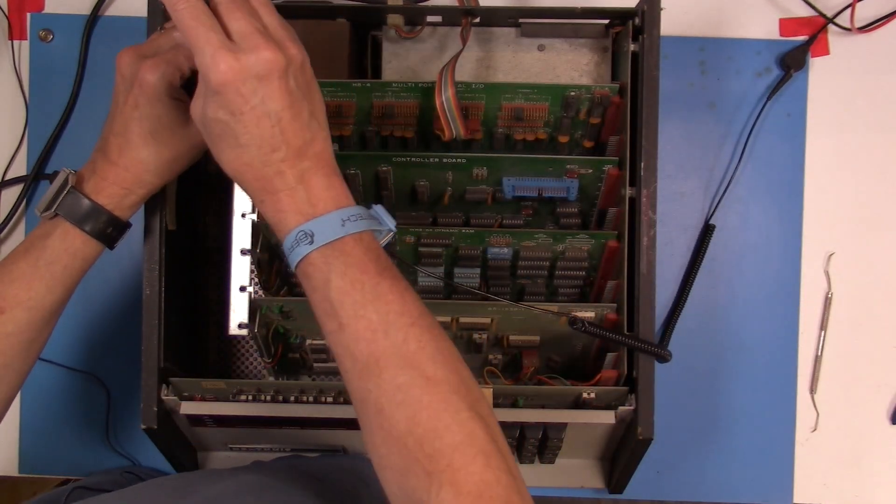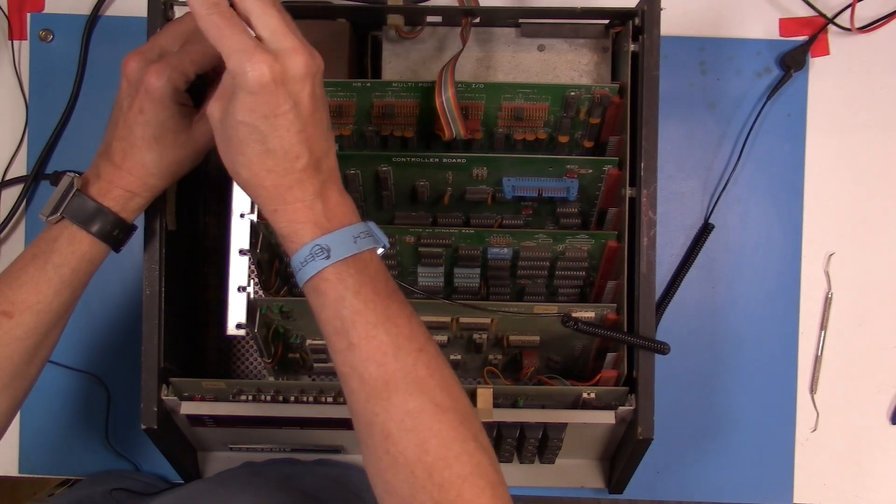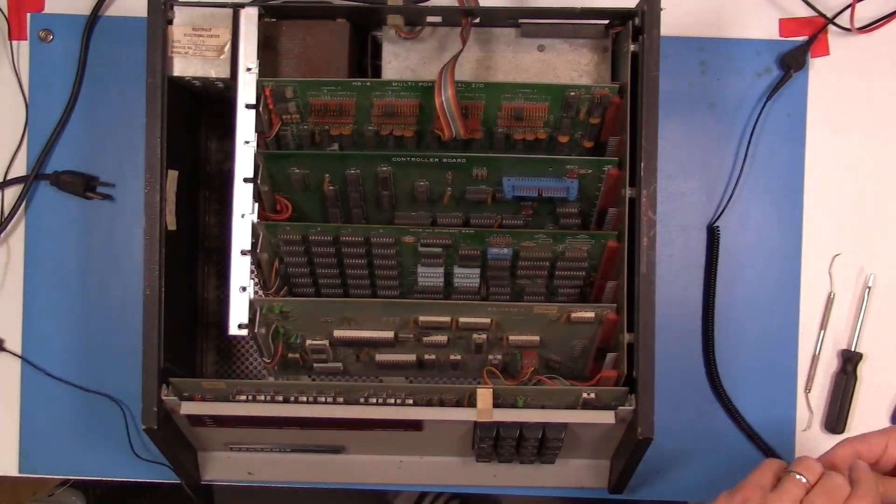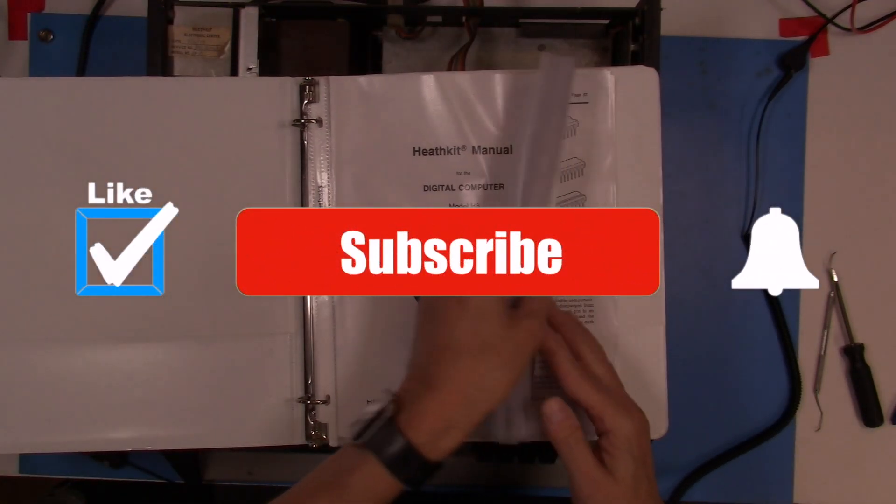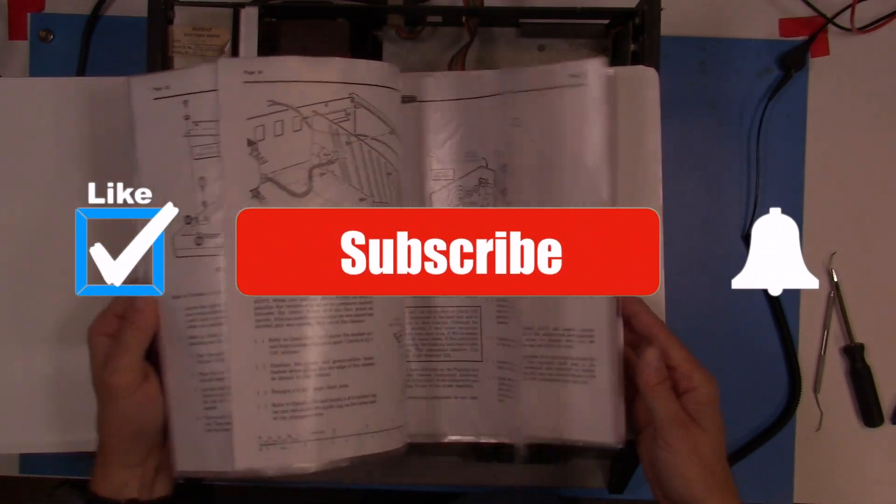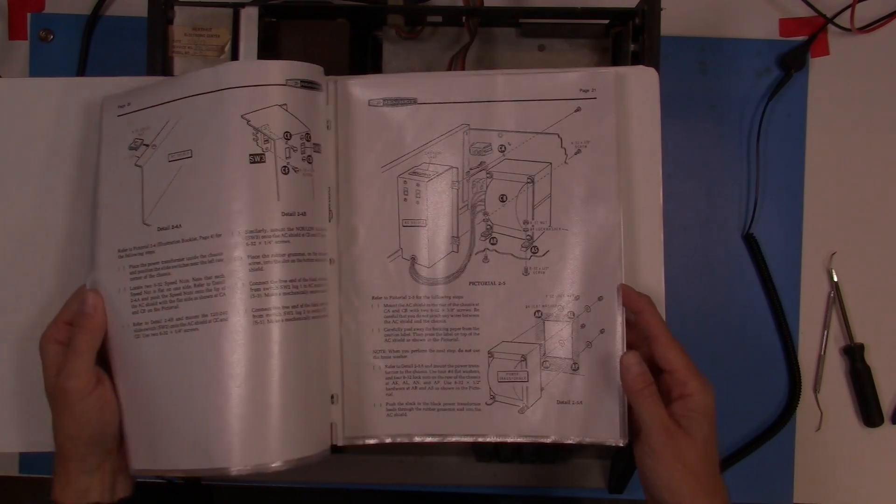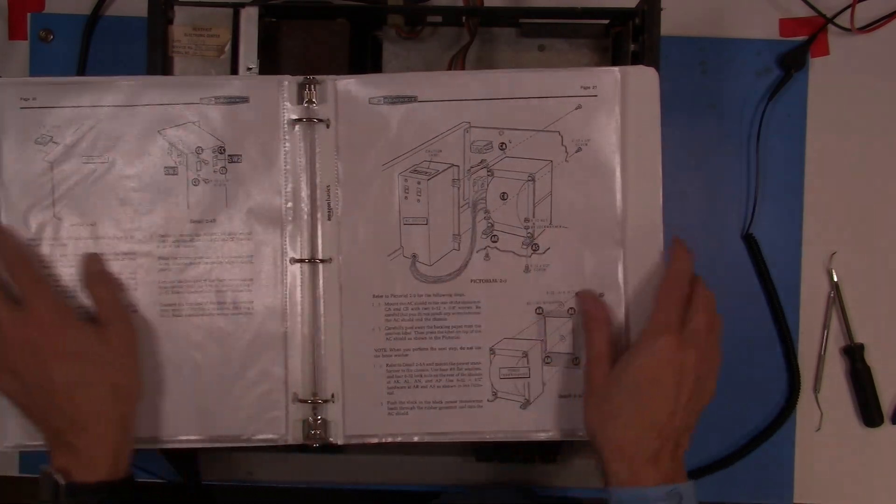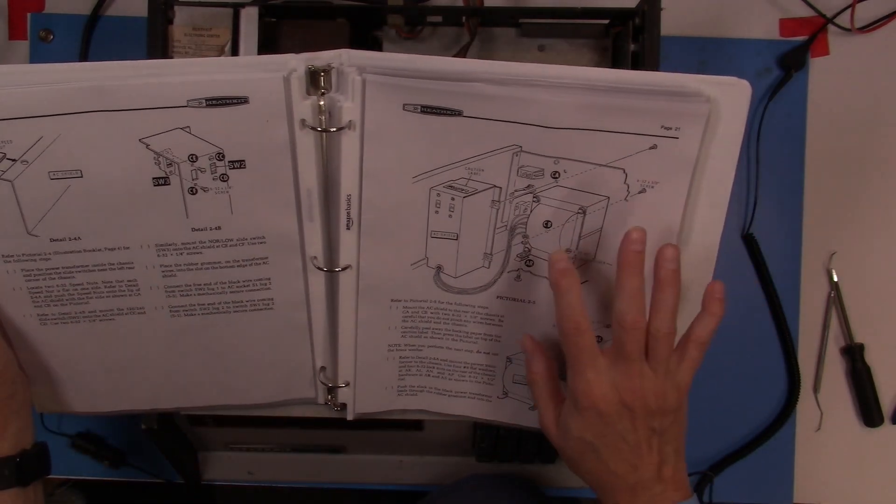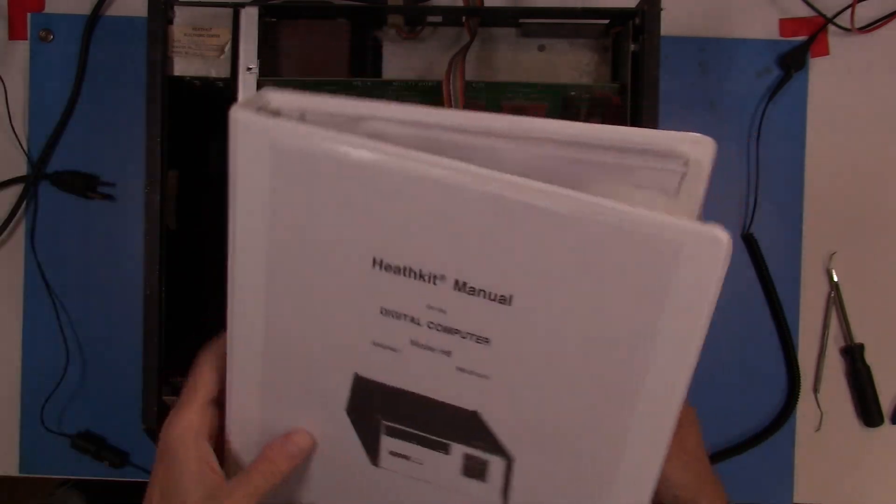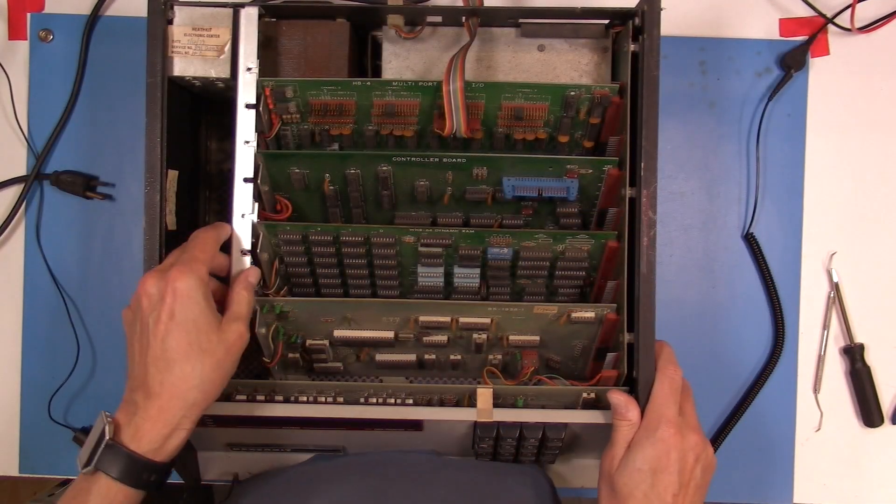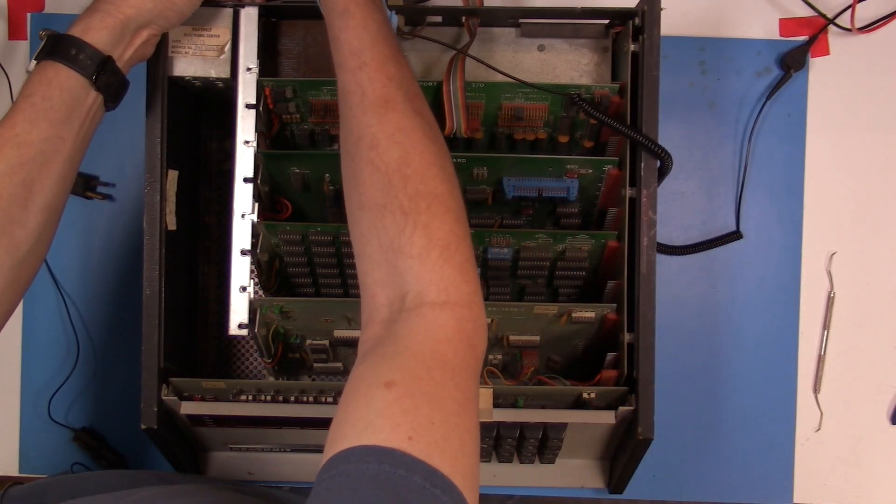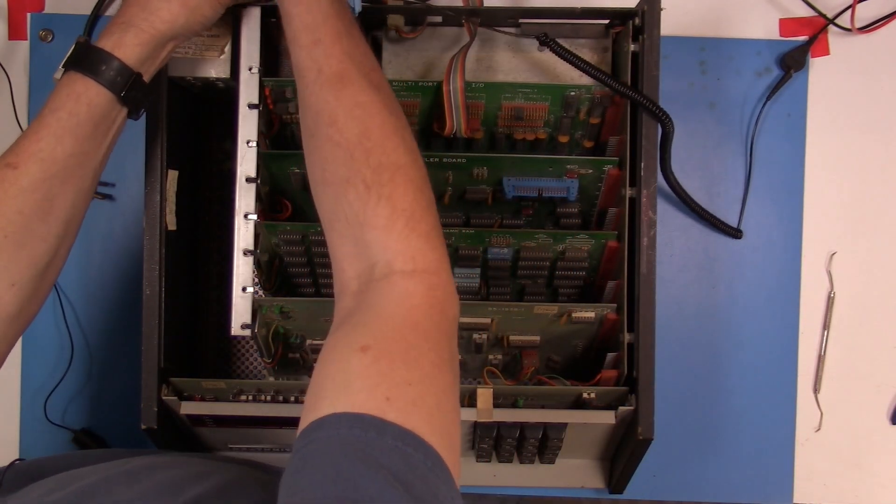From reading the boards, I know that's a fairly common thing that happens, and usually when it does, it damages something. Once I get all the cards out and do my power up of the power supply with a Variac, I'm going to go through the manual and go through the testing process for each stage of the build. And I think that will, to some degree, help keep me out of trouble.